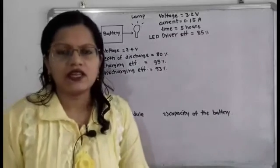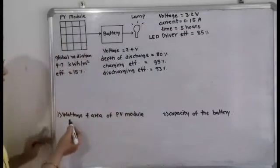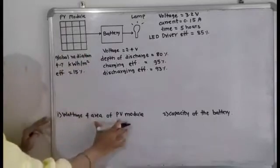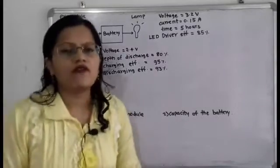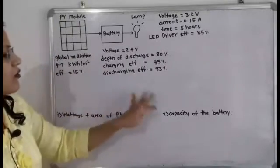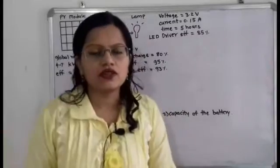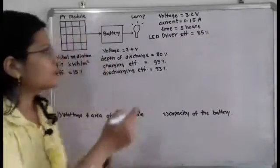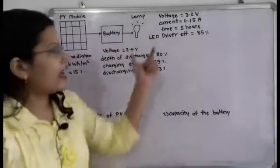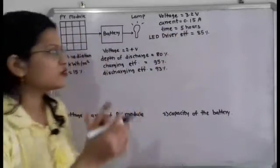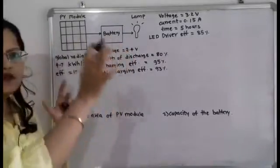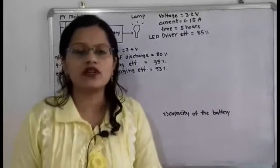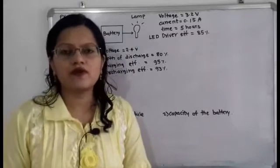Now, the factors we have to find out are: the wattage and area of the photovoltaic module, and the capacity of the battery. The output requirement is to light the lamp for 5 hours of operation. We need to determine what capacity the battery should have and what wattage and area the PV module should be. Let us move to the calculations.